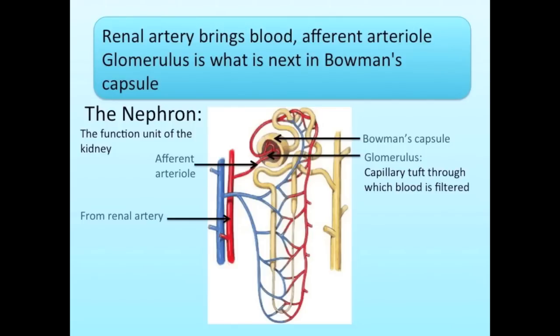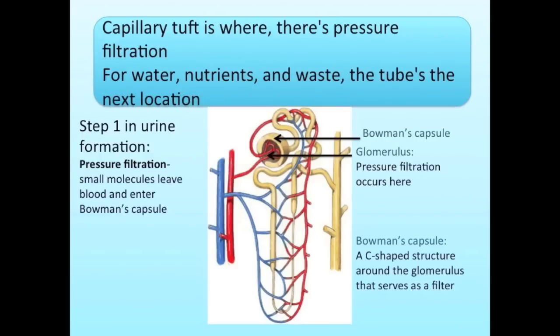Renal artery brings blood to the afferent arteriole. Glomerulus is what is next, in Bowman's capsule. Capillary tuft is where there's pressure filtration for water, nutrients, and waste — the tube's the next location.